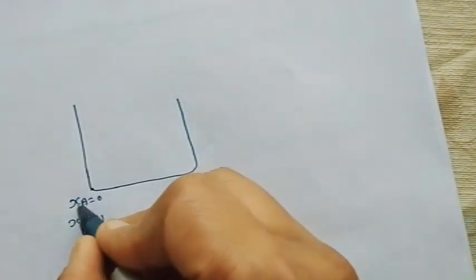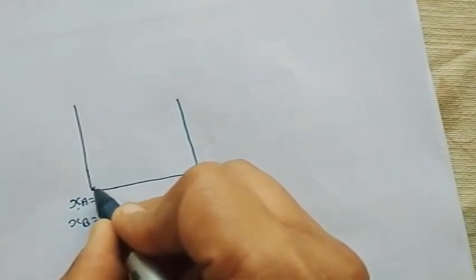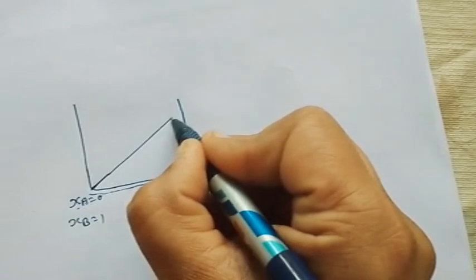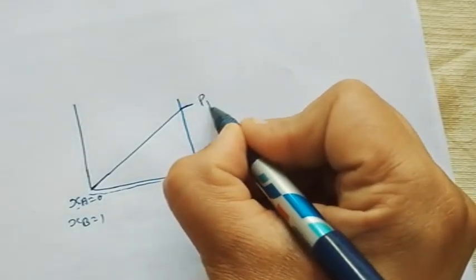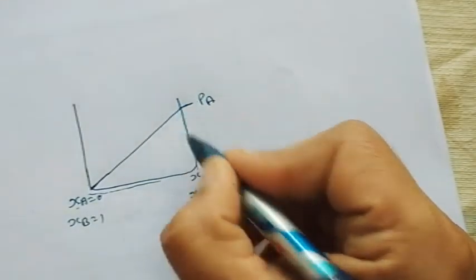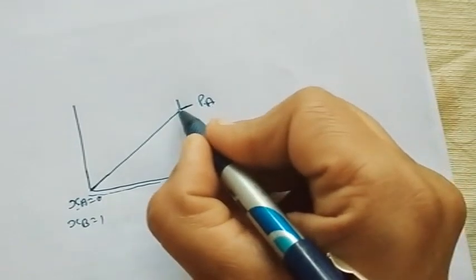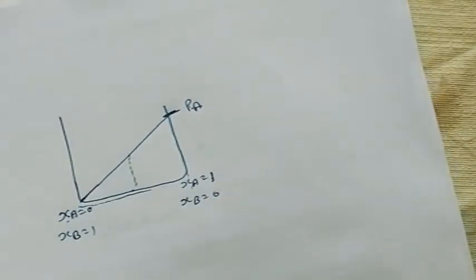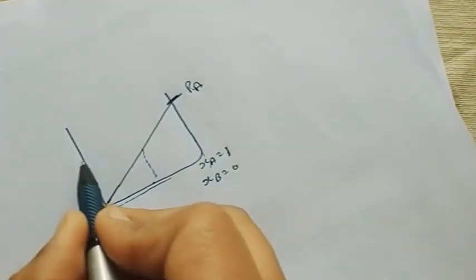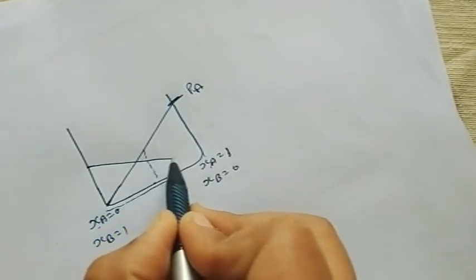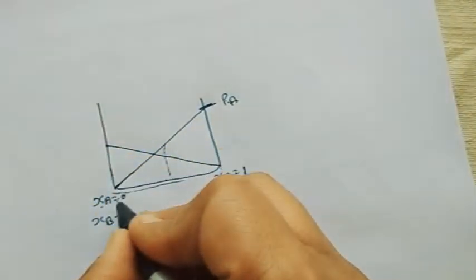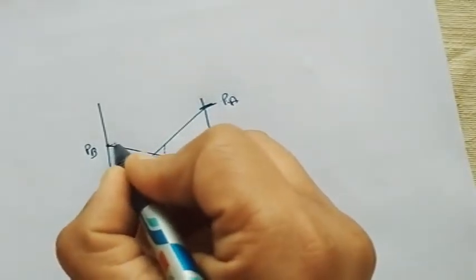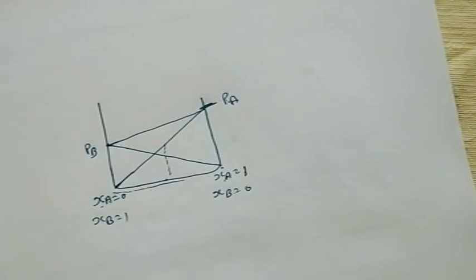If mole fraction of A is 0 then partial pressure of A is also 0. As the mole fraction of A increases, the partial pressure of A increases — if mole fraction is full (1), partial pressure of A is at maximum. If mole fraction is half, the pressure is half. This is the graph of Raoult's law.